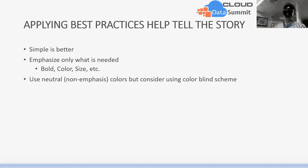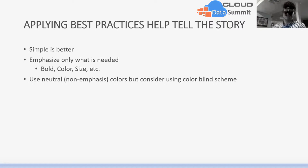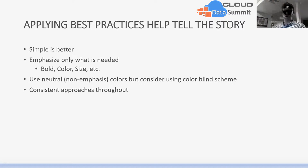One thing to consider is using neutral or non-emphasis colors while considering a colorblind scheme. According to the U.S. National Library of Medicine, one in 12 males and one in 200 females are colorblind — roughly 4.5% of the population. By using a colorblind scheme, we're able to use colors that are both neutral and available for our entire audience. We should also be consistent throughout the entire presentation or dashboard, because jumping around colors can distract the user and imply that something has changed. A good approach is the traffic color pattern using red, yellow, and green consistently.